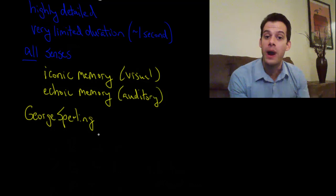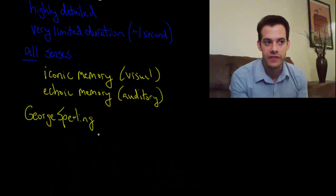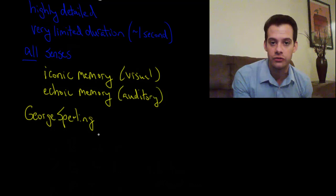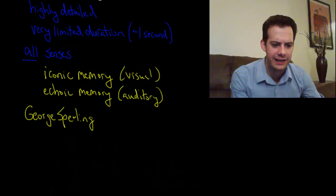But what Sperling found is if he waited just one second to ring that tone and ask for which row, within a second the letters were gone. People started making lots more mistakes, right? He also found that people could recall, when he asked within a quarter of a second, people could recall any of the rows. But they couldn't recall all of the rows because by the time they thought about one of the rows, the others essentially disappeared.